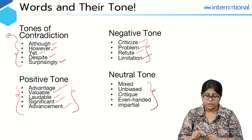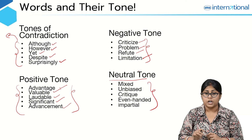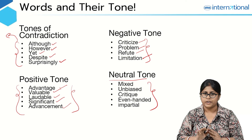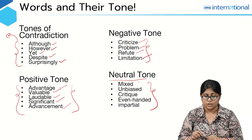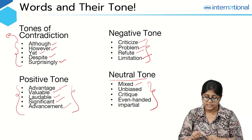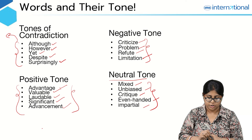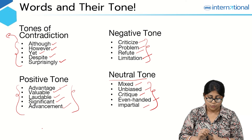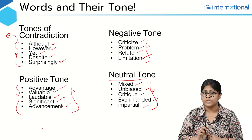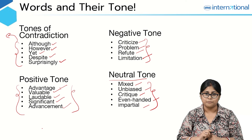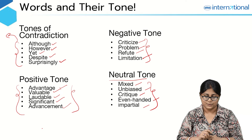Some words convey a neutral and bland tone where the author is not taking any sides — such as 'mixed,' 'unbiased,' 'critique,' 'even-handed,' and 'impartial.' Be mindful of these words the next time you see them in a reading comprehension passage.